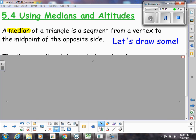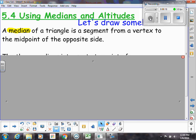So let's draw some. For example, I draw a triangle and I find the midpoint of the side. Then the median would go from that midpoint to the opposite vertex. If I did this side, that would be its midpoint and the vertex opposite of that would be right there. So those are both medians of a triangle.